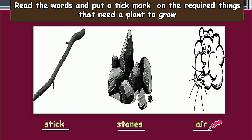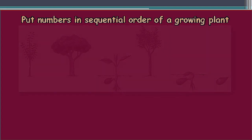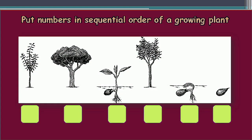Next activity: put numbers in sequential order of a growing plant. First one, second, third, fourth, fifth, and the last one is six. This is the sequential order.